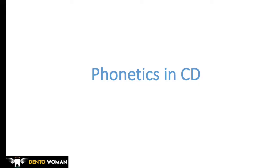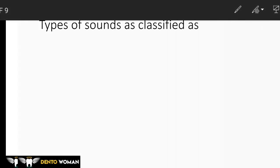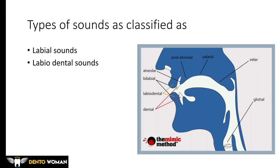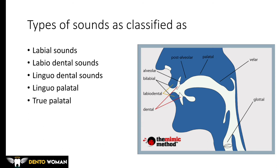Hello and welcome to my channel. Today's topic is phonetics in complete denture — it is one of the easiest topics yet trickier. Types of sounds are classified as labial sounds, labiodental sounds, lingua dental sounds, lingua palatal sounds, true palatal sounds, nasal sounds, and vowel sounds.